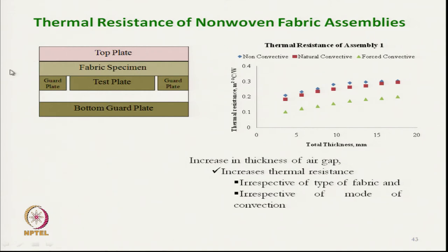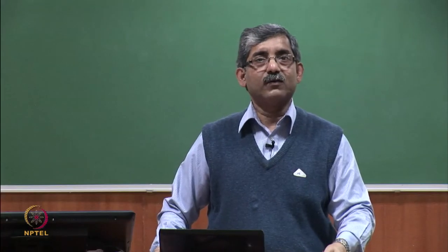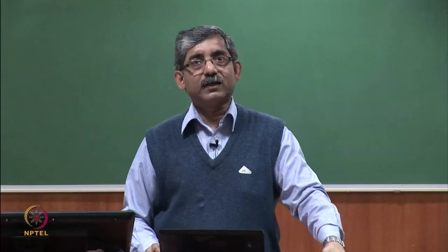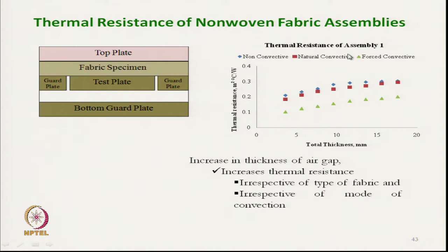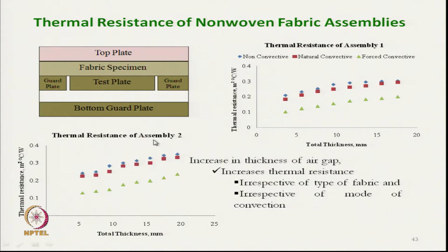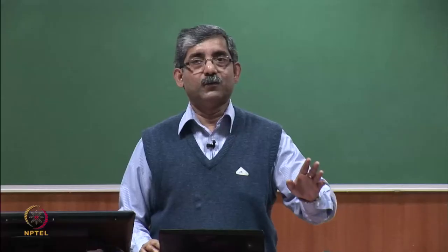For natural convection mode, the top plate is removed and heat is transmitted through conduction, radiation, and natural convection — it was expected that the fabric would show higher thermal transmission. In forced convection mode, the top plate is removed and extra air is blown along the plane, simulating the additional heat loss encountered in windy conditions. For fabric assemblies 1 and 2, the outer layer was normal woven fabric with pores present.